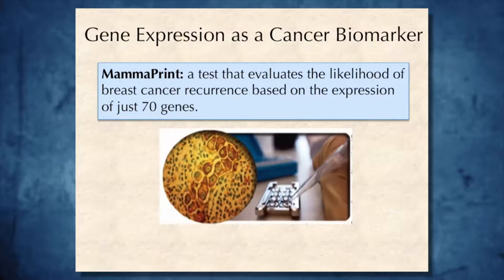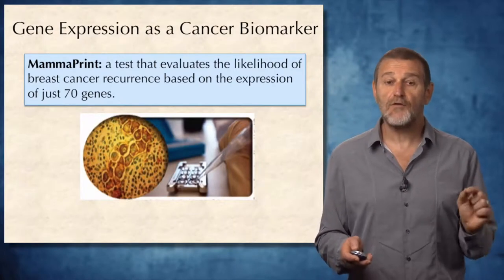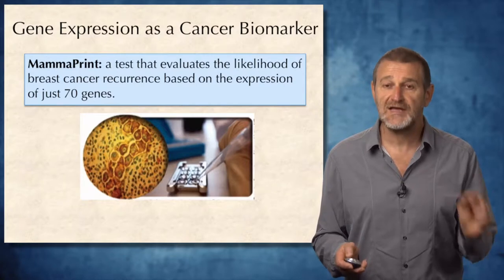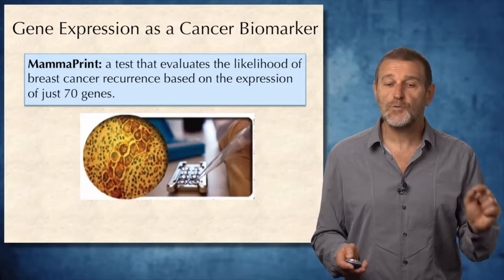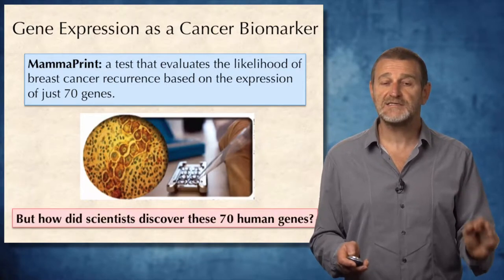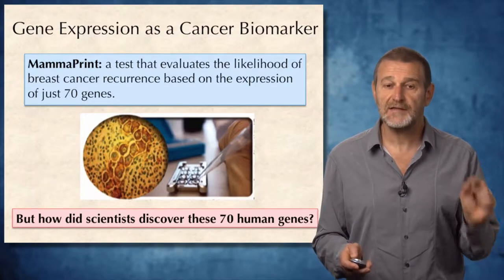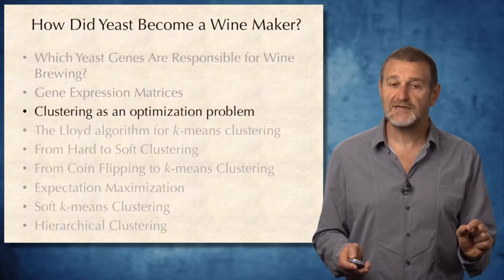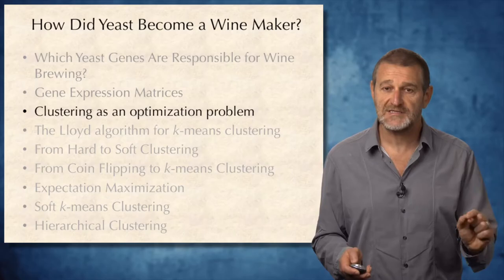In fact, there are already approaches to cancer diagnostics such as MammaPrint, a test that evaluates the likelihood of breast cancer recurrence based on the expression level of just 70 genes. The question that we will be interested in: how did scientists discover these 70 human genes implicated in breast cancer? But to answer this question, we need to formulate clustering as an optimization problem.